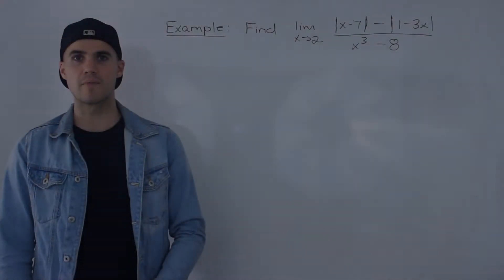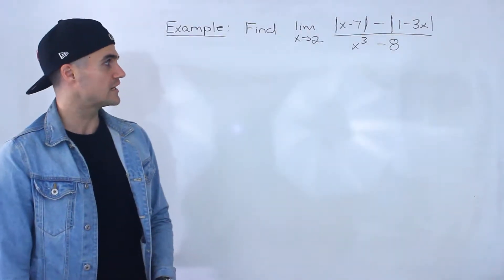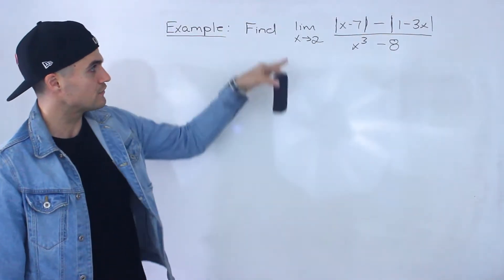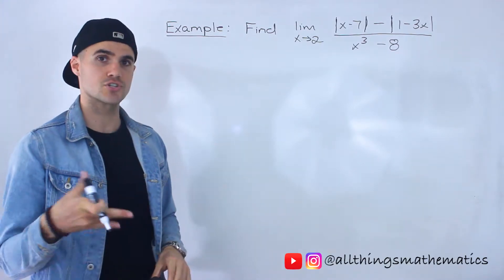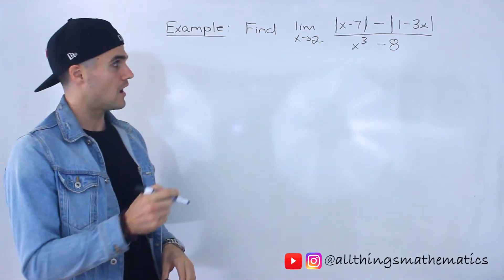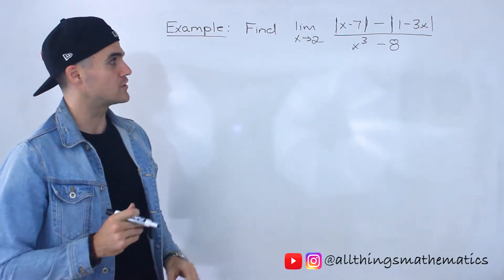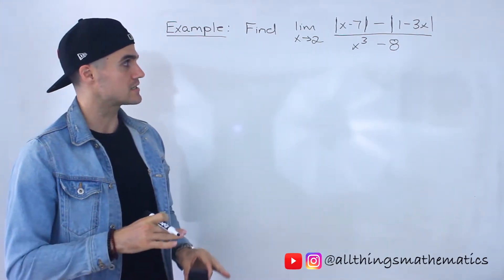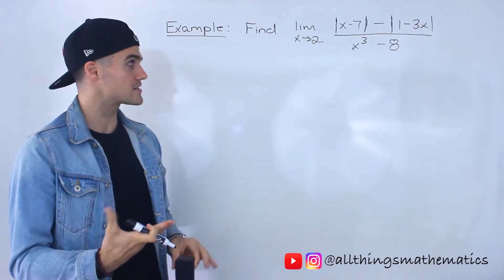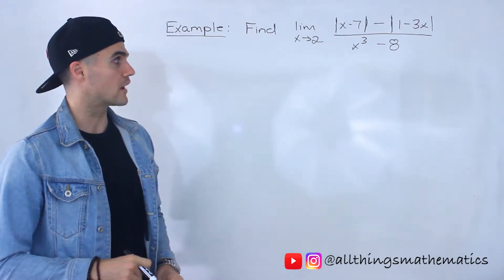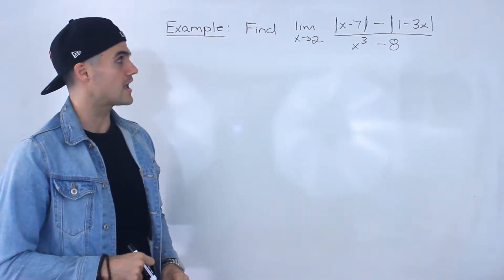Welcome back. Patrick here, and moving on to the next question. We've got to find this limit: the limit as x approaches 2 of the absolute value of x minus 7, minus the absolute value of 1 minus 3x, all over x to the power 3 minus 8.